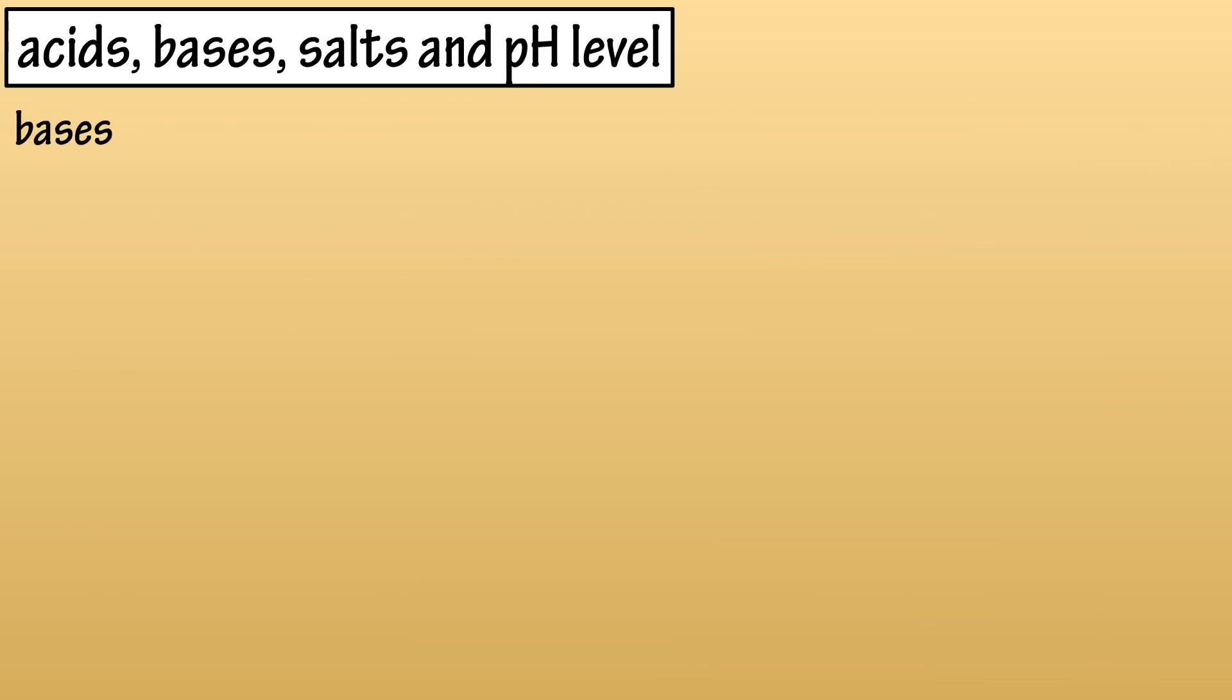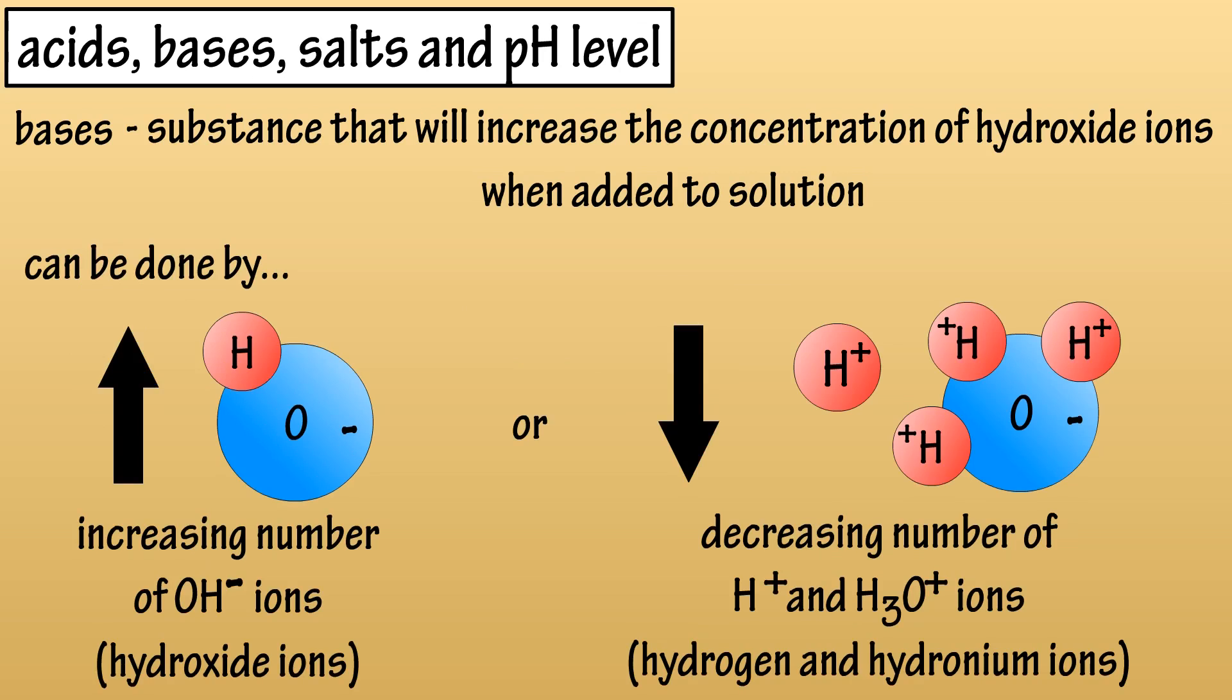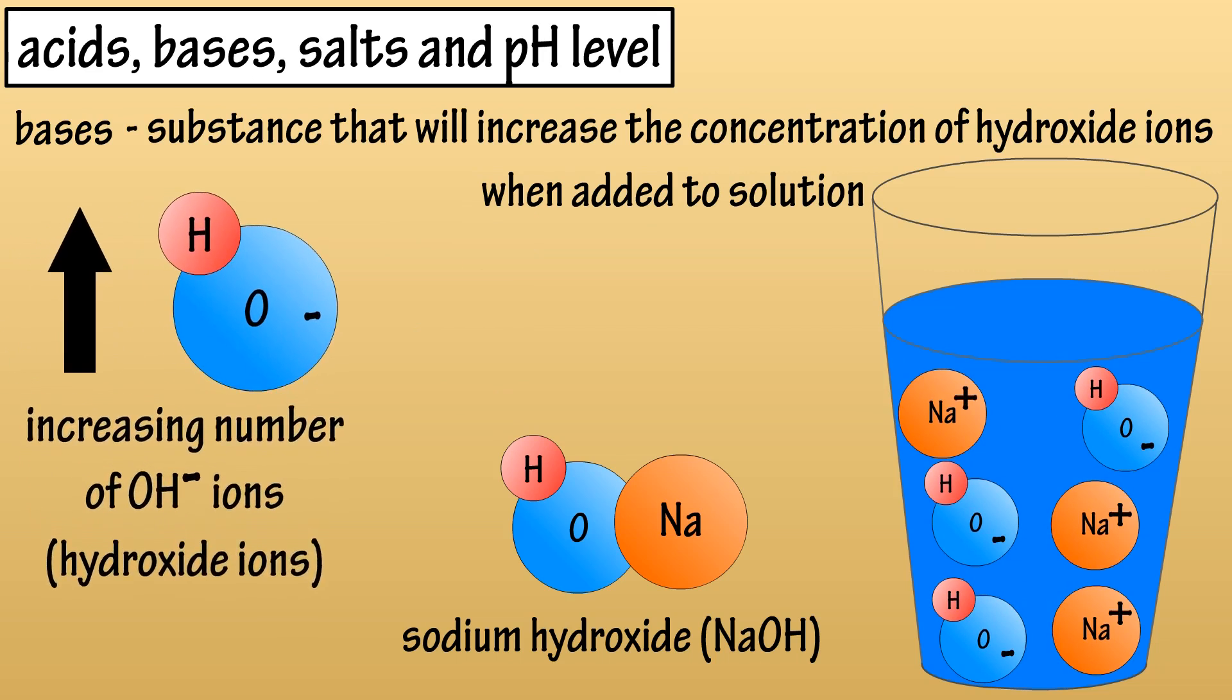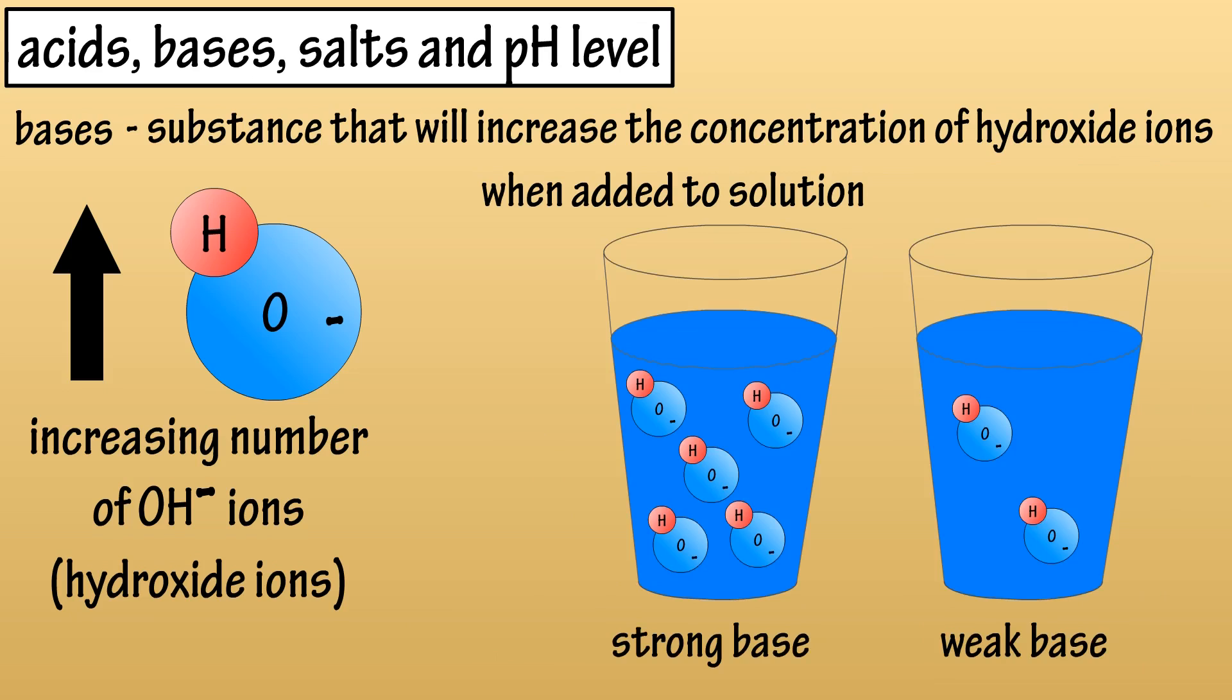Now for bases. Bases are essentially the opposites of acids in that they shift the hydrogen ion-hydroxide ion balance in favor of the negative hydroxide ion. This can be done by increasing the number of hydroxide ions or decreasing the number of hydrogen ions. For instance, sodium hydroxide or NaOH will break down or disassociate into positive Na ions and negative OH ions. So, the balance has shifted in favor of the negative hydroxide ions, meaning sodium hydroxide is a base. Bases can also be strong or weak depending on how well they break apart. Sodium hydroxide is a strong base.